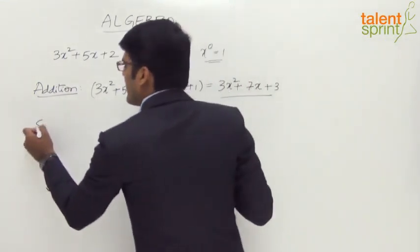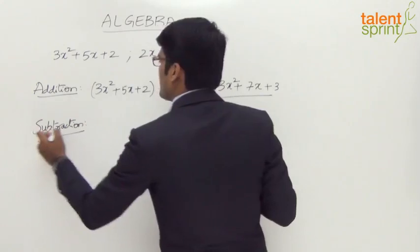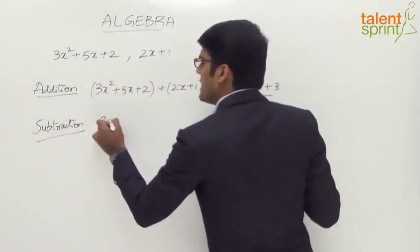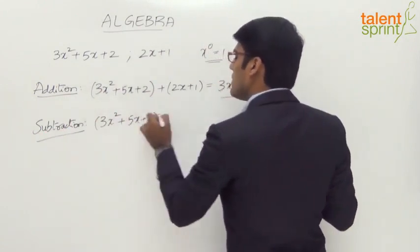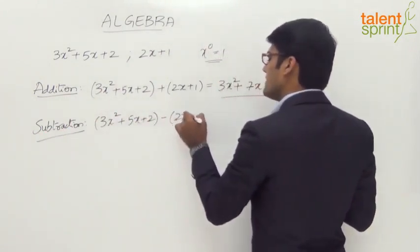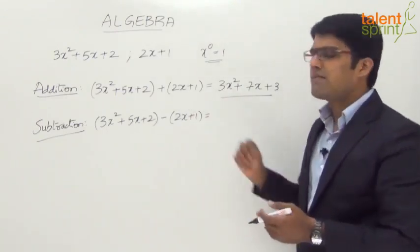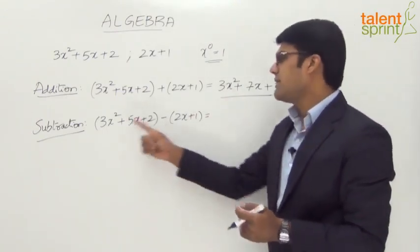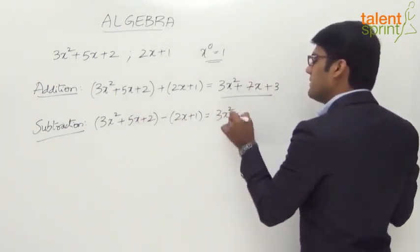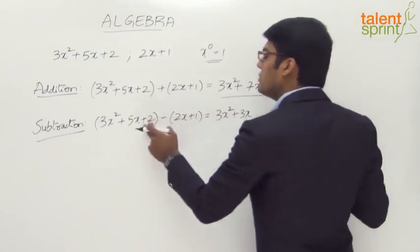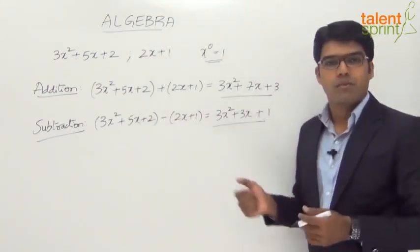Likewise, how do we subtract? Subtraction of the two polynomials: 3x squared plus 5x plus 2 minus of 2x plus 1. More or less the same process, except here we do the subtraction. So 3x squared will remain as it is — 3x squared — then 5x minus 2x gives you plus 3x, and 2 minus 1 gives us 1. So this is the difference of the two polynomials.